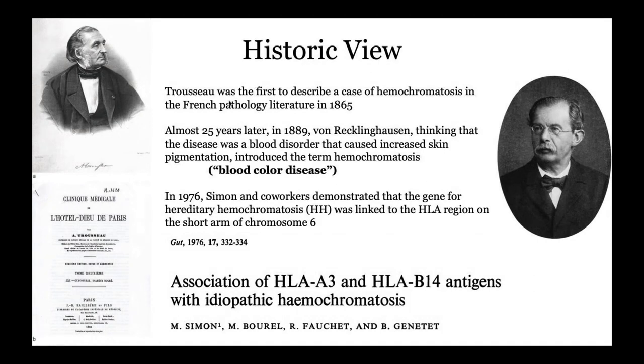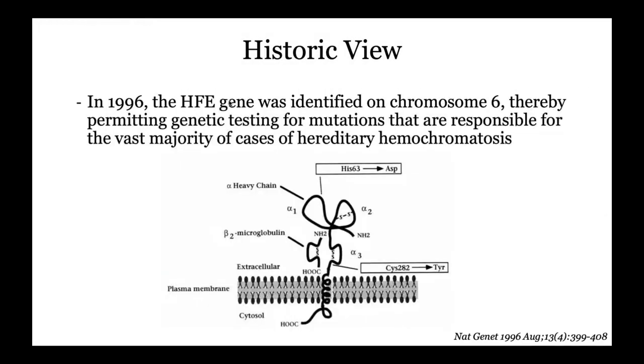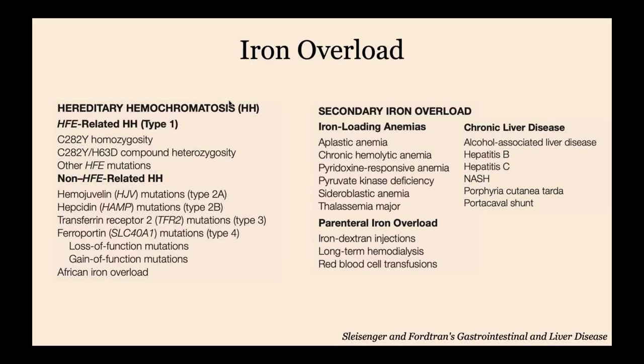Later on in 1976, they discovered the actual association between chromosome 6 and the HLA region. And more recently, in 1996, they discovered the HFE gene, which we now know is responsible for the majority of cases of hereditary hemochromatosis.